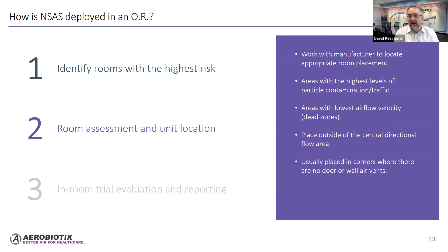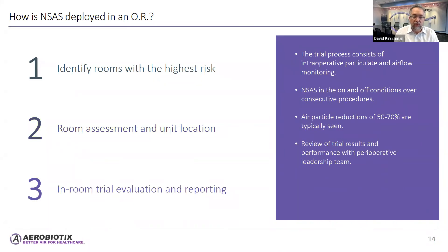We place the unit outside of the central directional flow area — outside the laminar or vertical flow zone in the center of the room — usually in corners where there are no doors or wall air vents. We then perform an in-room trial evaluation and reporting. The trial consists of intraoperative particulate airflow monitoring with the unit in both on and off conditions over consecutive procedures, and we typically see air particle reductions of 50 to 70 percent throughout the room.